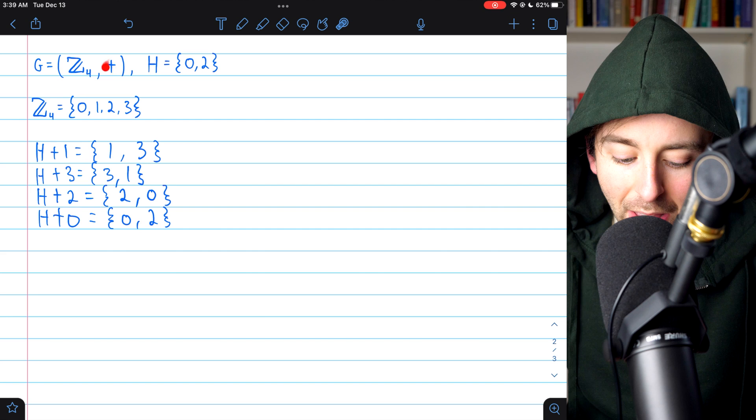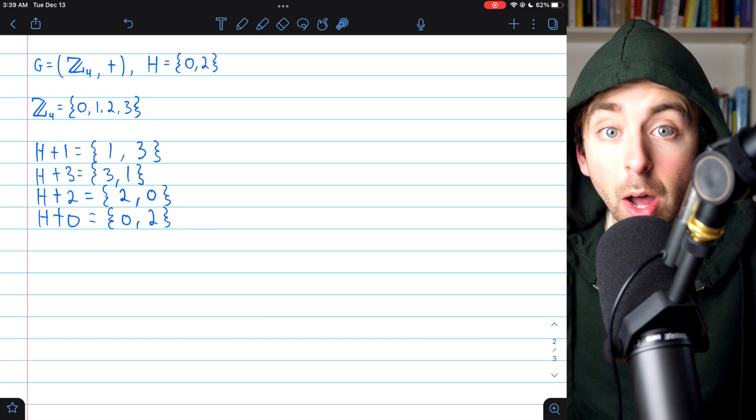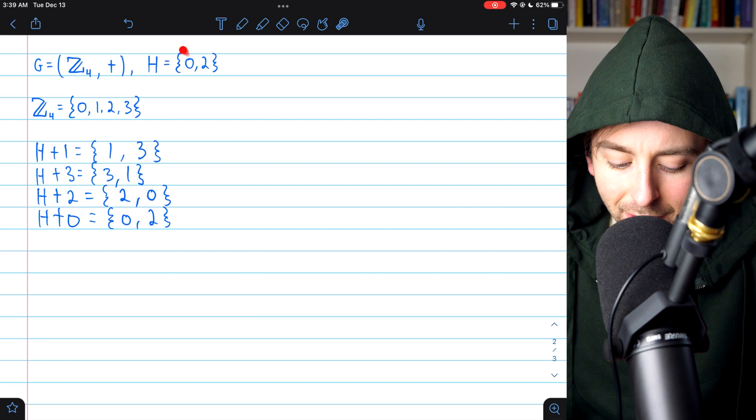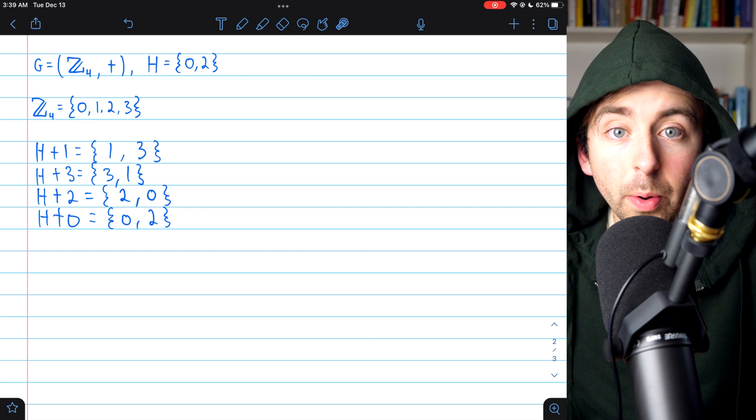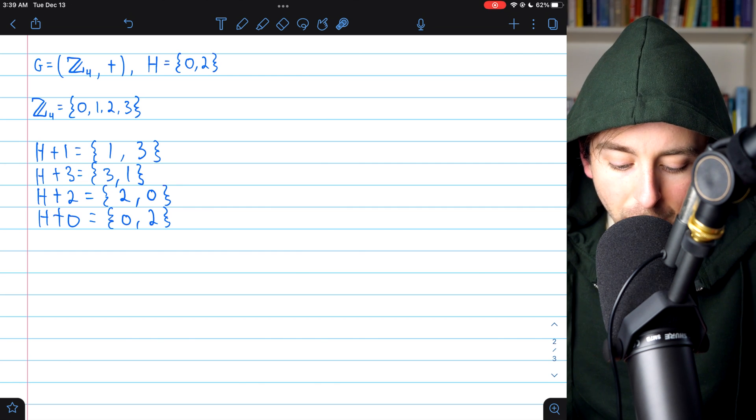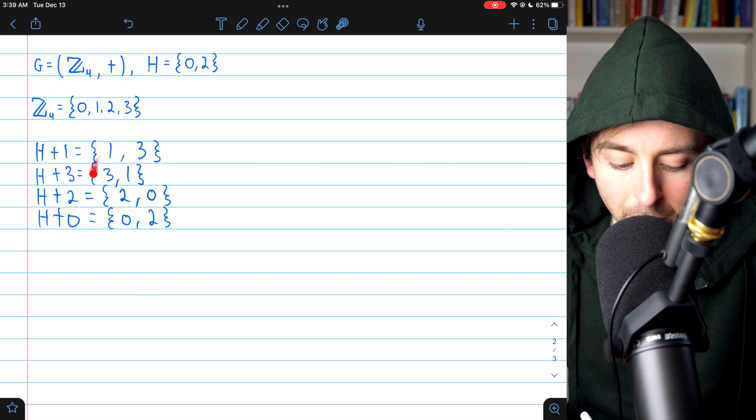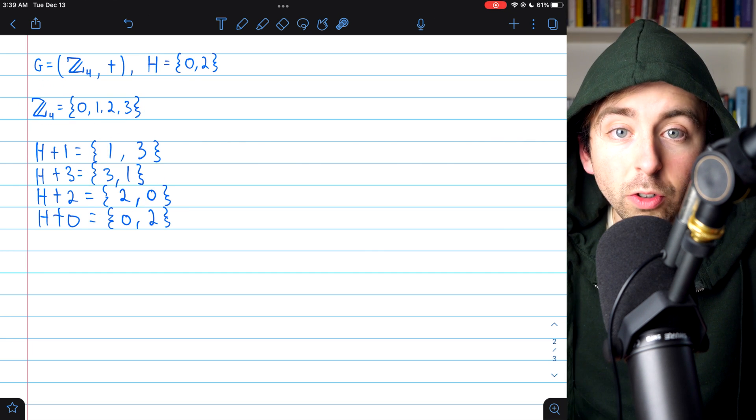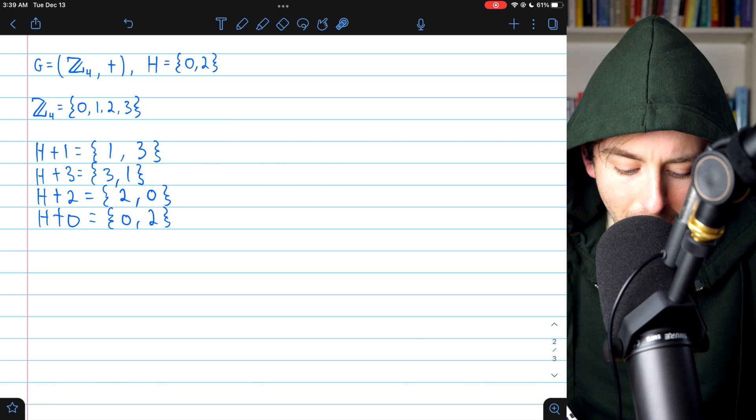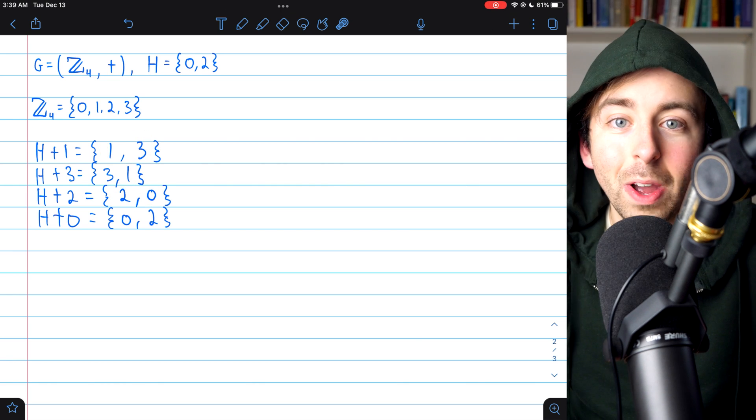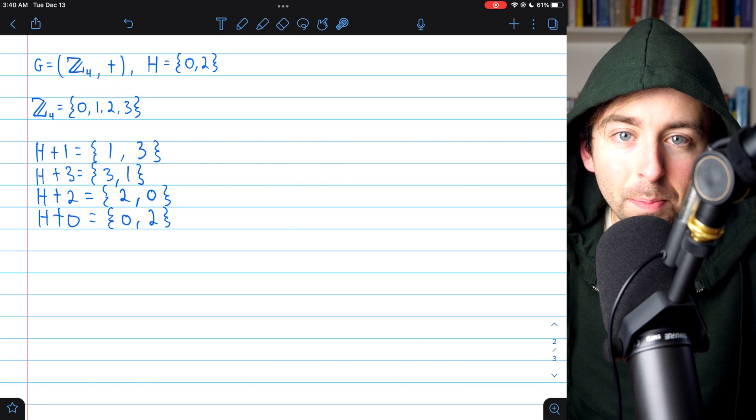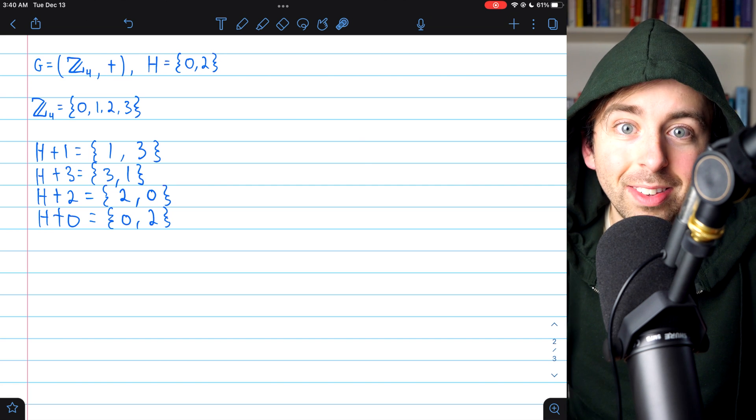We could have the group of additive integers mod 4 and this subgroup containing 0 and 2. We can take a look at the cosets of this subgroup and see that they partition the group into the set containing 1 and 3 and the set containing 2 and 0. So that's just an example. Let's prove that this always happens.